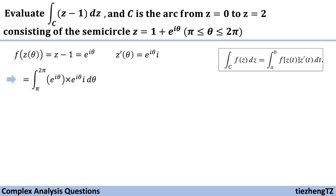Next, we substitute. It becomes the integral from pi to 2 pi of f(z(theta)) times z'(theta) d theta. After rearrangement, our equation becomes the integral from pi to 2 pi of e to the power of 2 times i times theta, times i, d theta.